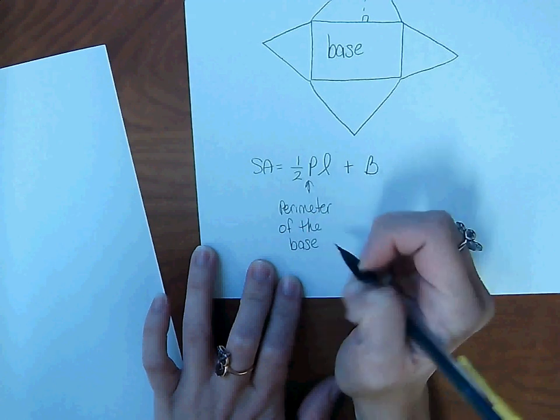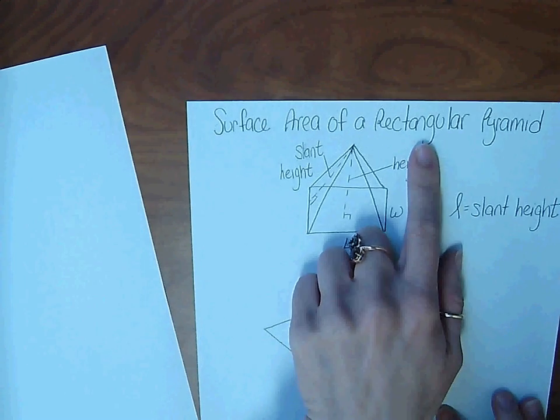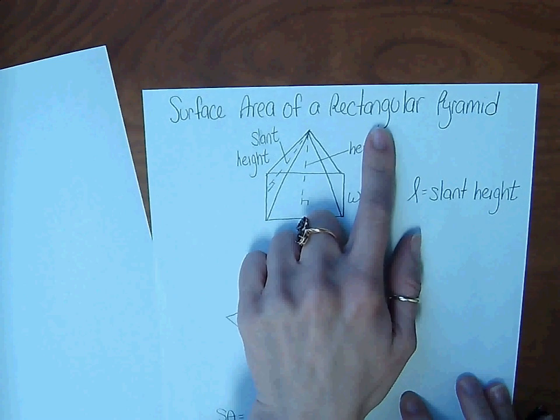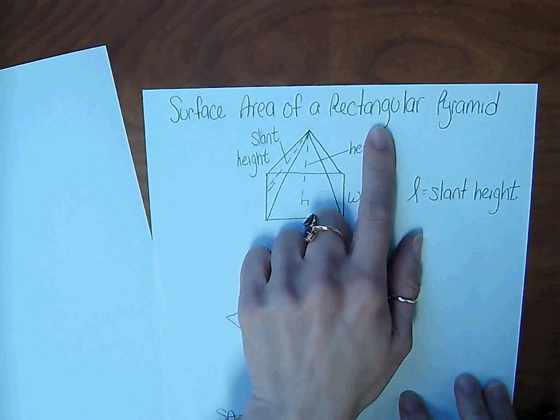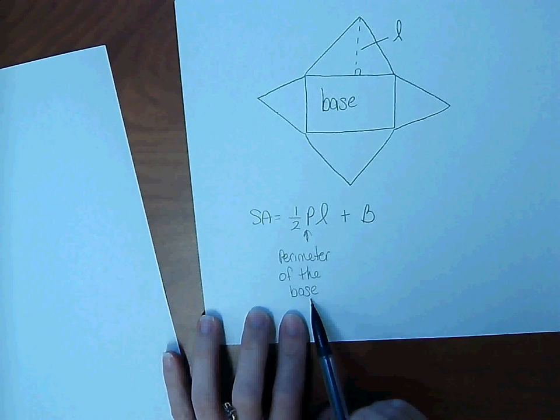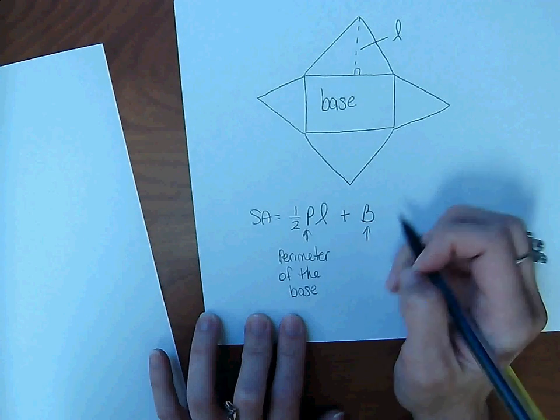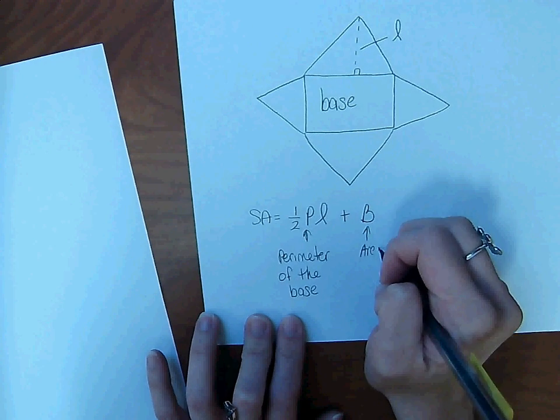This formula works whether it's a rectangular pyramid or a triangular pyramid or any type of pyramid you have. So it's very important that you remember to find the perimeter of whatever the base is. In this case, rectangle. And big B is the area of the base.